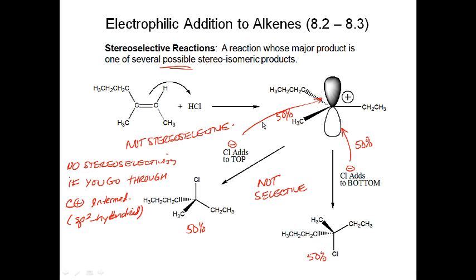In summary: regioselectivity deals with Markovnikov's rule, and stereoselectivity deals with making one or more chiral centers but then selecting one of the enantiomers or diastereomers over the other. That's our idea of regio- and stereoselectivity, which we'll apply as we go through the remaining reactions.